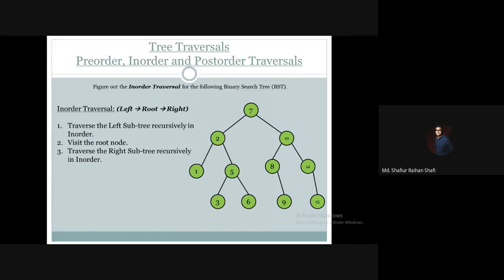So we are given a binary search tree. The root is 7. This is the left subtree of the given BST and this is the right subtree of the given BST. We first traverse the left subtree, which has root 2, in in-order manner. Node 2 has a left subtree containing 1, and a right subtree containing 5, 3, and 6.